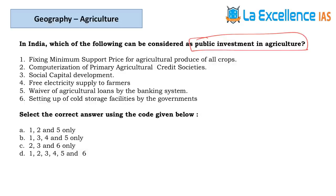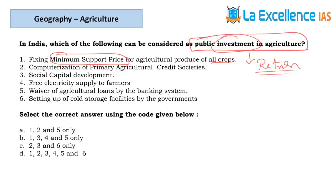The next question — most debatable — is about public investment in agriculture. In the exam, focus on solving, not debating. Statement 1 — fixing MSP for agricultural produce. MSP is not an investment; it's an assurance or guarantee from the government that if the market price falls, they will buy at that price. It's no longer an investment because you get no return. So eliminate statement 1 and arrive at the answer.